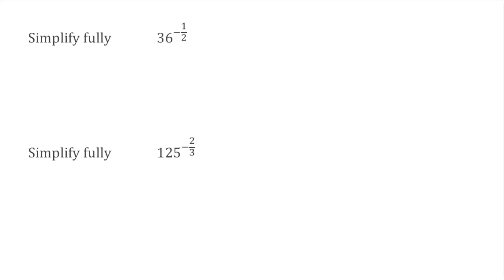When we've looked at negative indices in the past, what we've actually been looking for is the reciprocal. So when we've got a term to a negative power, what we can do is simply write that as 1 over whatever the term is to the positive power. So for this first example, we have 36 to the power of negative 1 half. Once we see that negative index, we know we've got a reciprocal, so we can write this as 1 over 36 to the power of positive 1 half.